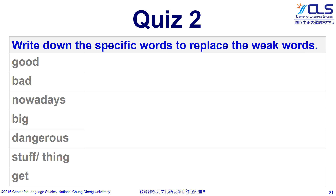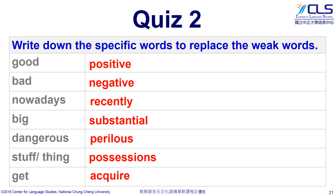Try to write down specific words to replace the weak words. We can replace 'good' with 'positive,' 'nowadays' with 'recently,' and 'get' with 'acquire.'